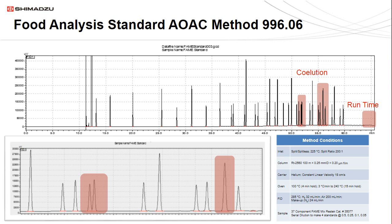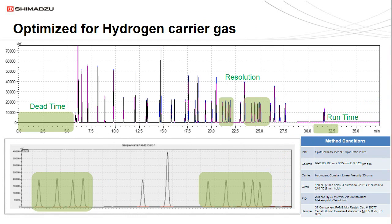Here is the chromatogram for the new and improved method. The first thing you'll notice is the dead time is now about cut in half — closer to five minutes, whereas it was close to 10 minutes previously. The second thing you'll notice is that the resolution in those previously co-eluting peaks is now quite good — all these peaks are baseline resolved. And the run time is actually cut in half as well, closer to 30 minutes now, whereas that was about an hour before. So all of these factors combined result in quite a bit better analysis.